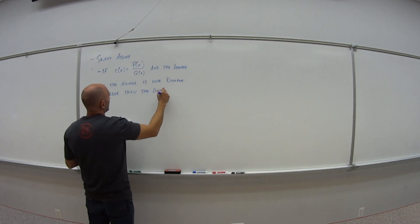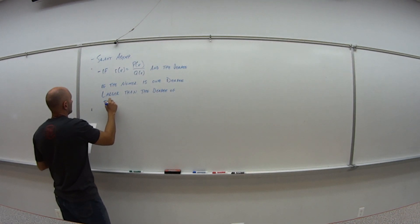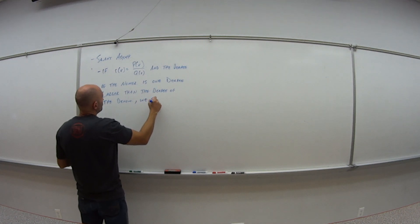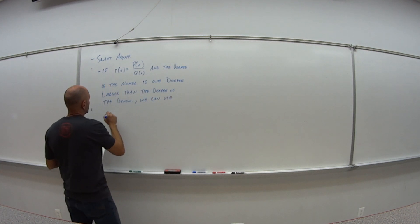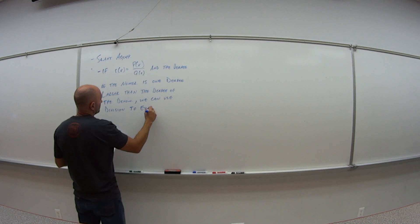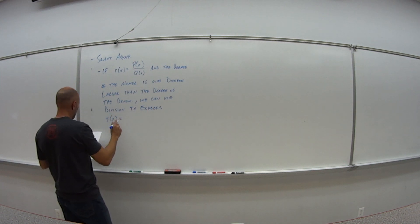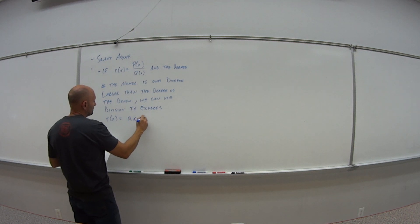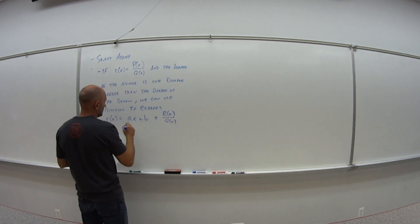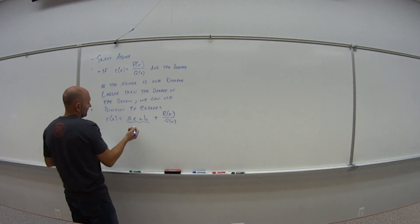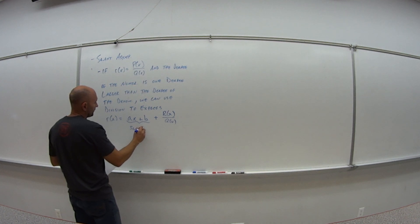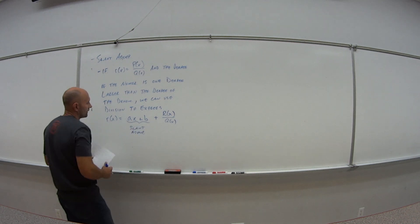then we can use division to express r of x as ax plus b plus the remainder divided by the quotient. And ax plus b, this is what? This is like the equation of a line. Y equals mx plus b. So this ends up being a line, which ends up being our slant asymptote. That portion there.